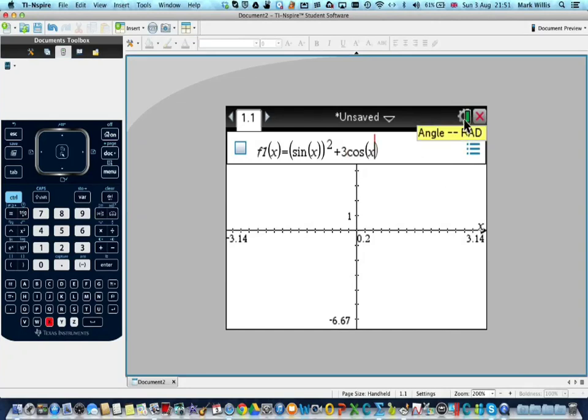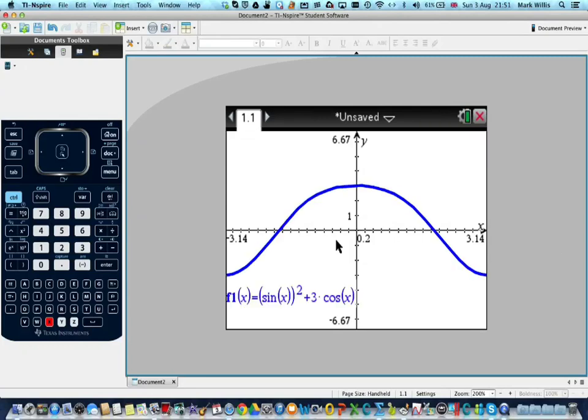And then square it plus 3 trig cos x. Now, one other thing you should check first of all is that your calculator is in radian mode, like mine is already. If not, you need to change it. But for an SL exam, you should by default be in radian mode. Press enter. You get a graph.